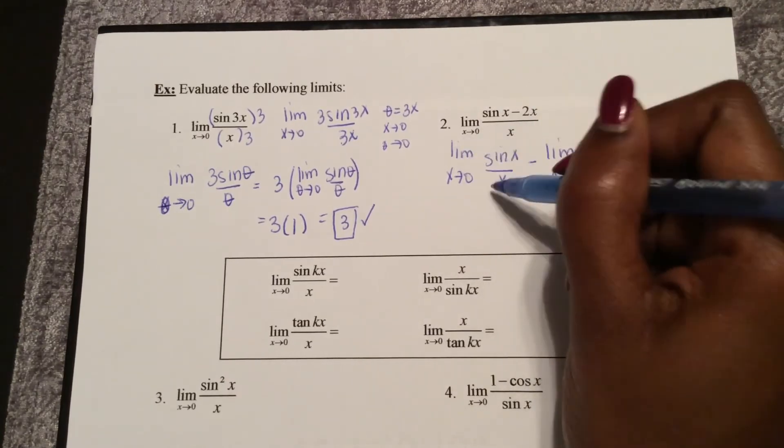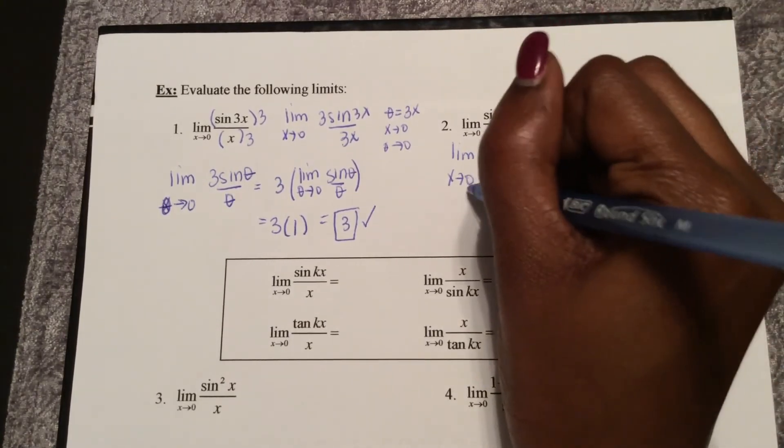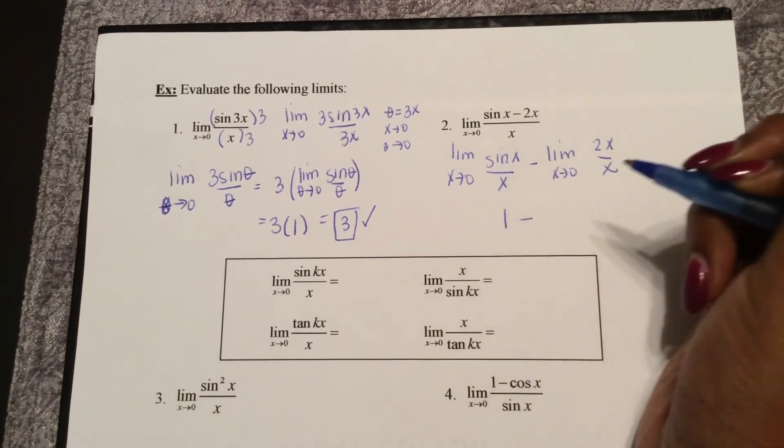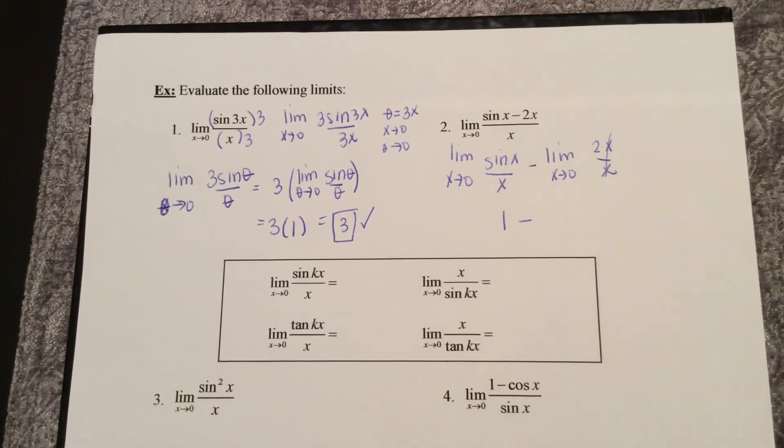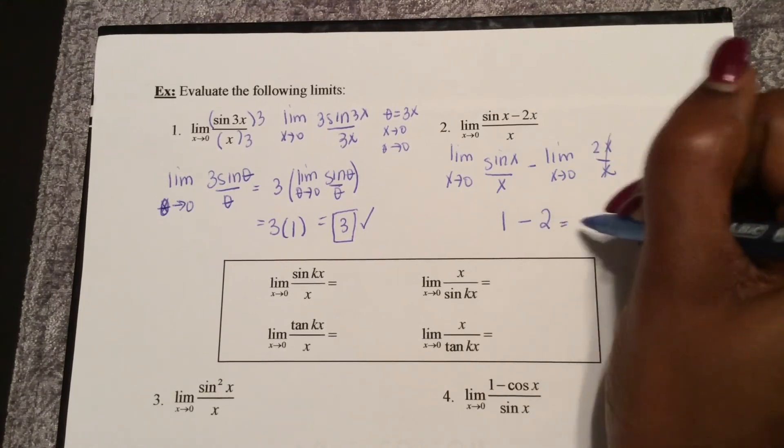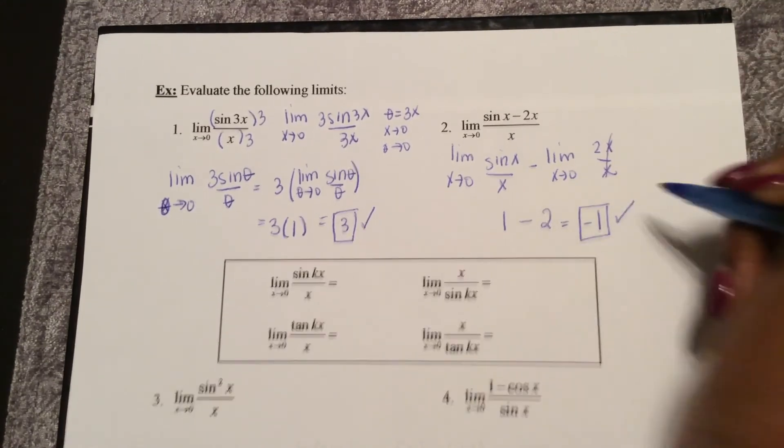Well, sine x over x, the limit as x approaches 0 is 1 minus, well, x over x cancels to 2. So my answer is negative 1.